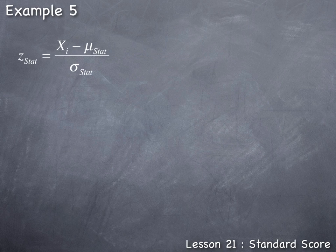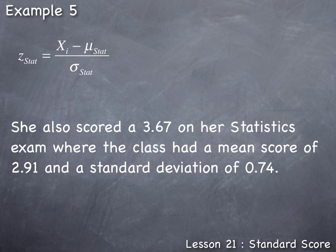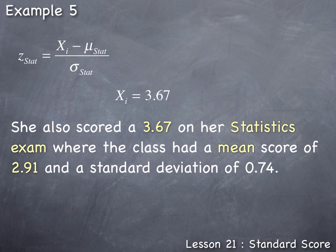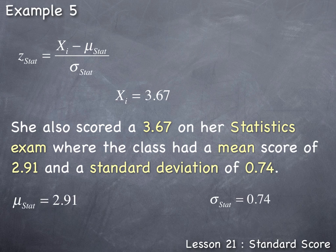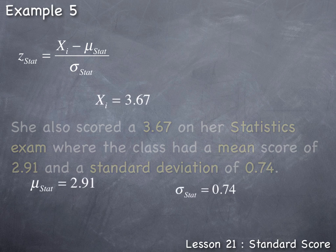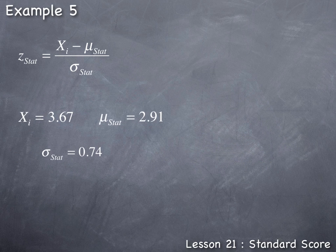Now we need to calculate the standard score for this student's score on her statistics exam. Since she scored a 3.67 on her statistics exam, her data value x sub i in statistics is 3.67. The entire class had a mean score of 2.91, so the population mean mu for this statistics exam is equal to 2.91. The entire class had a standard deviation of 0.74, so sigma, the population standard deviation on the statistics exam, is 0.74.